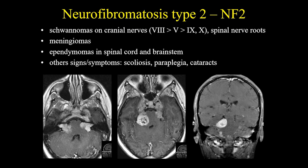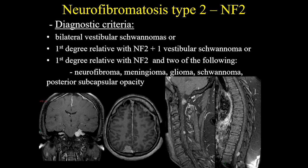Classically, NF2 is characterized by schwannomas of cranial nerves, mostly the 8th, followed by the 5th, 9th, and 10th, and also the spinal nerve roots. They are associated with meningiomas. Ependymomas in the spinal cord and brainstem can also be seen. Other signs and symptoms like scoliosis, paraplegia, and cataracts can also be found. To completely fulfill the diagnostic criteria for NF2, you should have bilateral vestibular schwannomas, or a first-degree relative with NF2, plus one vestibular schwannoma or two of the following: neurofibroma, meningioma, glioma, schwannoma, and posterior subcapsular opacity. In the case of NF2, you have bilateral vestibular schwannomas, also multiple meningiomas, and in the spinal cord you also see some schwannomas as well.